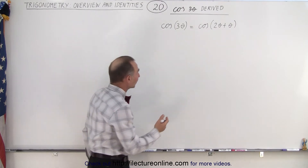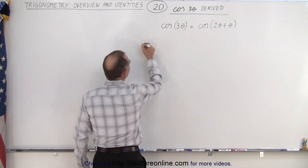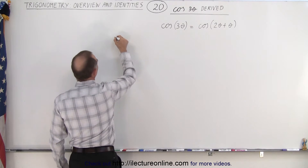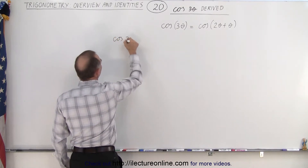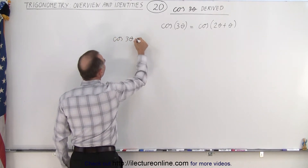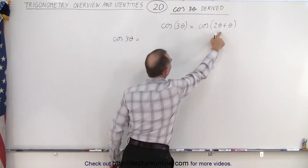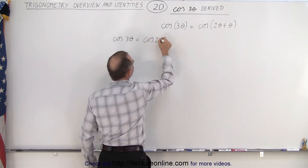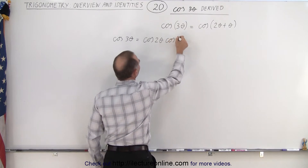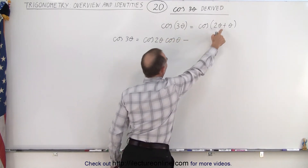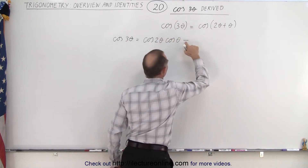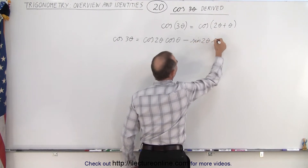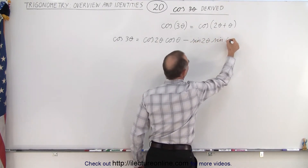We know what the identity for that is. The cosine of three theta is therefore equal to the cosine of the first angle times the cosine of the second angle, minus — because there is a plus — the sine of the first angle times the sine of the second angle.